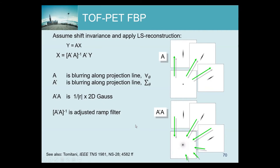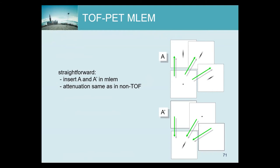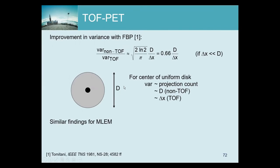For MLEM it is straightforward: simply insert the TOF-aware projection and back-projection into the MLEM update. The projection of a point source means blurring it with the TOF kernel, and back-projection of a sinogram point is the same blurring. The main motivation is that TOF improves the information in every event, and therefore the expected standard deviation for the same resolution should be lower than without TOF — which turns out to be true.